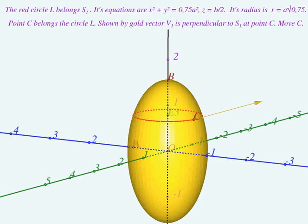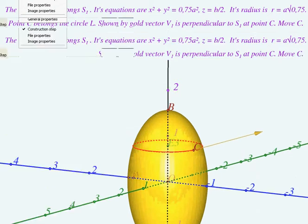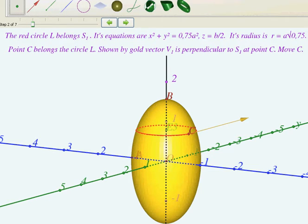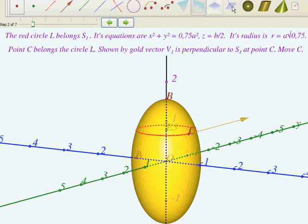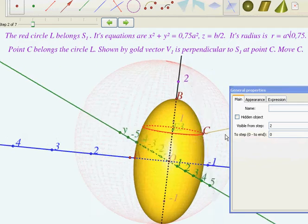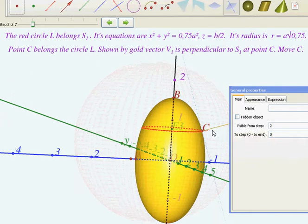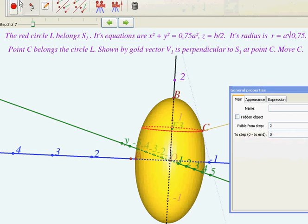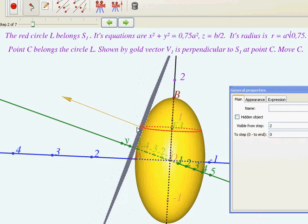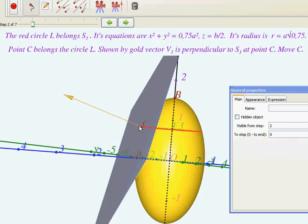Verify that the vectors are perpendicular to the corresponding surfaces. To do this, construct a plane through point C perpendicular to any of the vectors. The corresponding surface must be tangent to the plane.